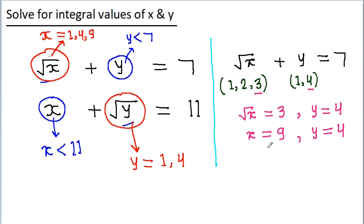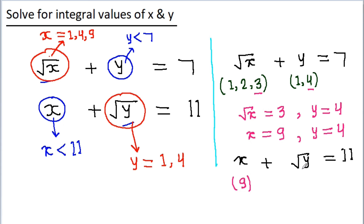We can also check whether these values satisfy the second equation. The second equation is x plus root y equals 11. With x equal to 9 and y equal to 4, the value of root y is 2, and 9 plus 2 equals 11, so these values satisfy equation 2 as well. Thus, the solution is x equals 9 and y equals 4.